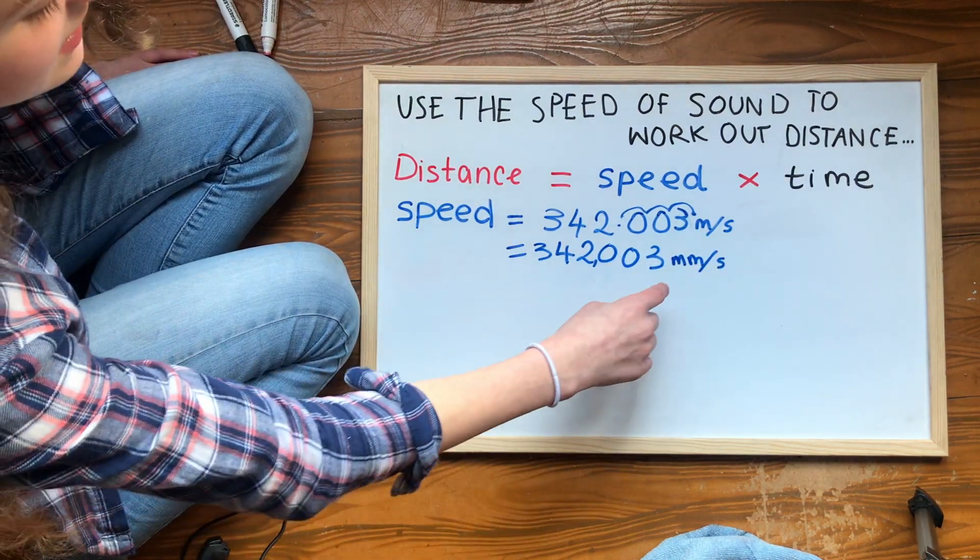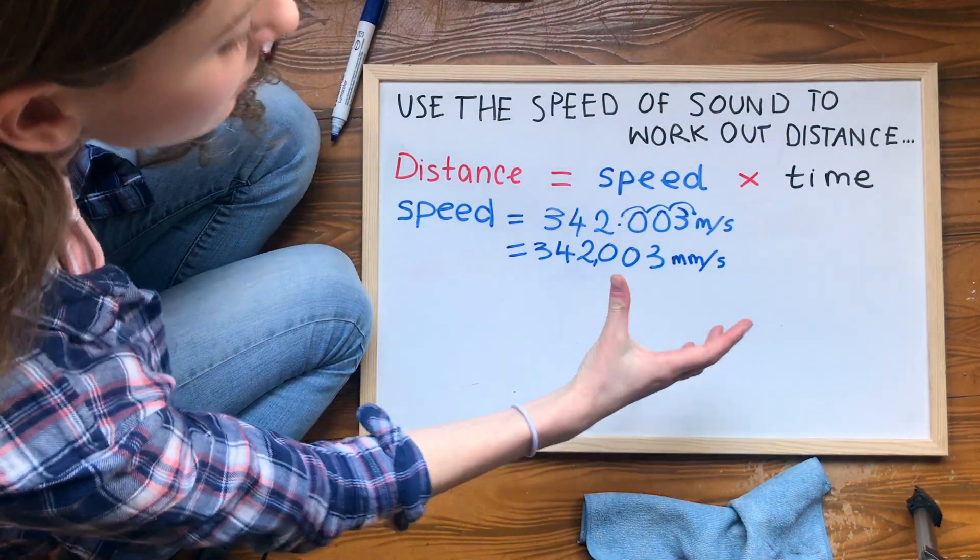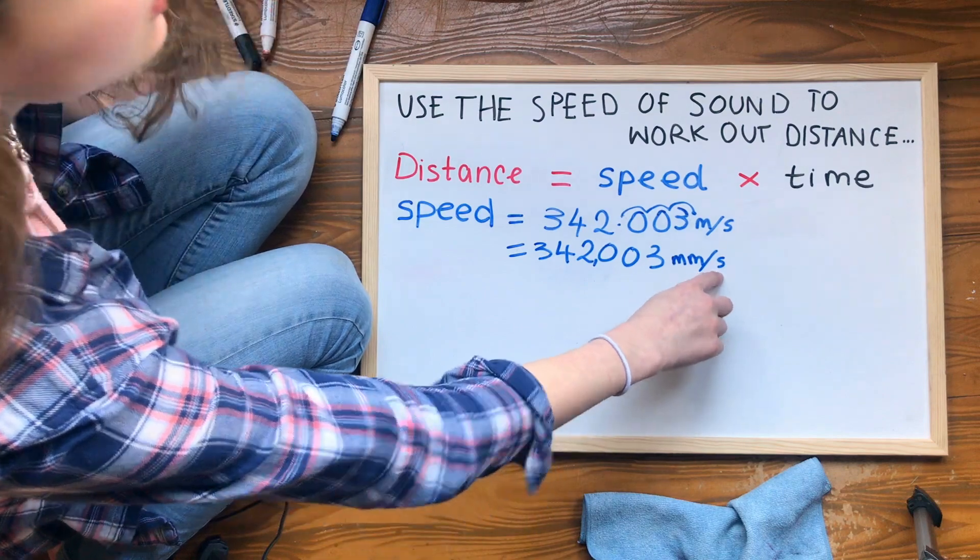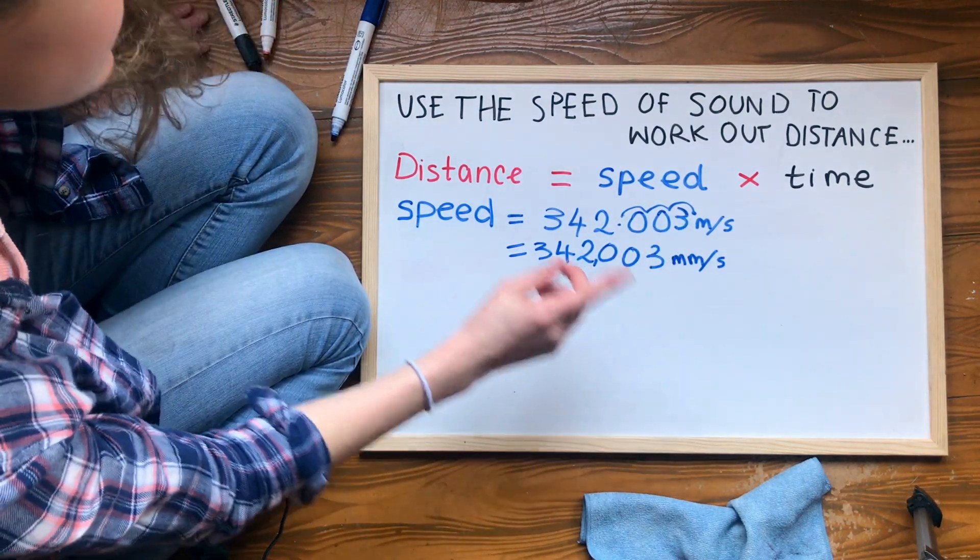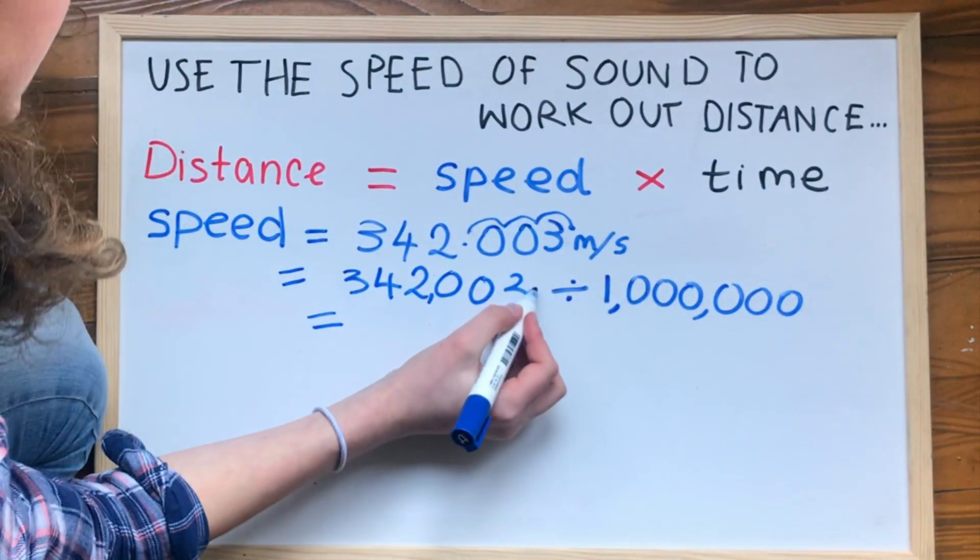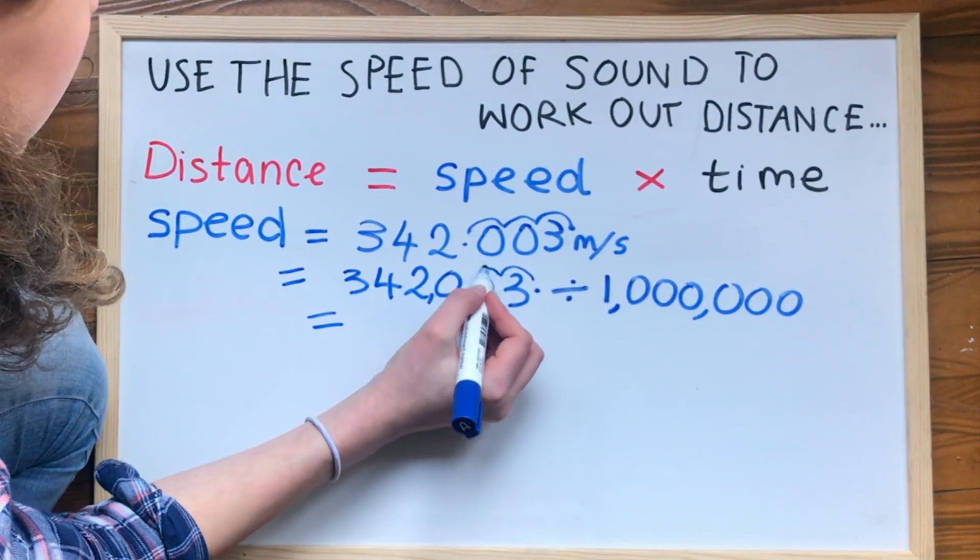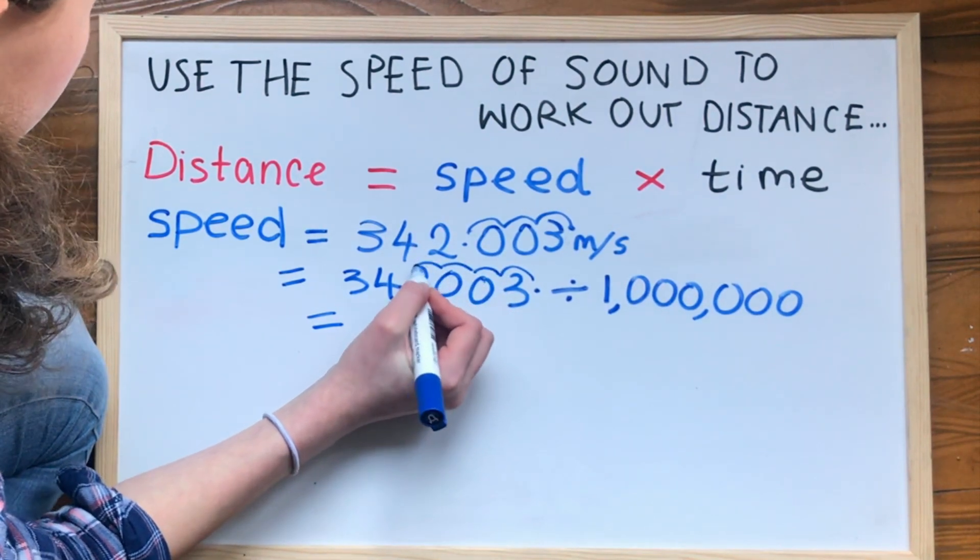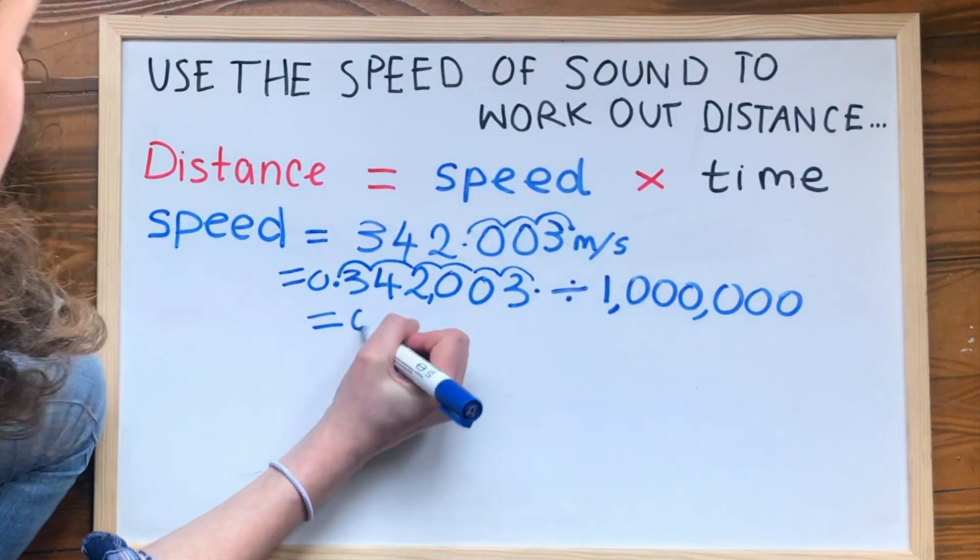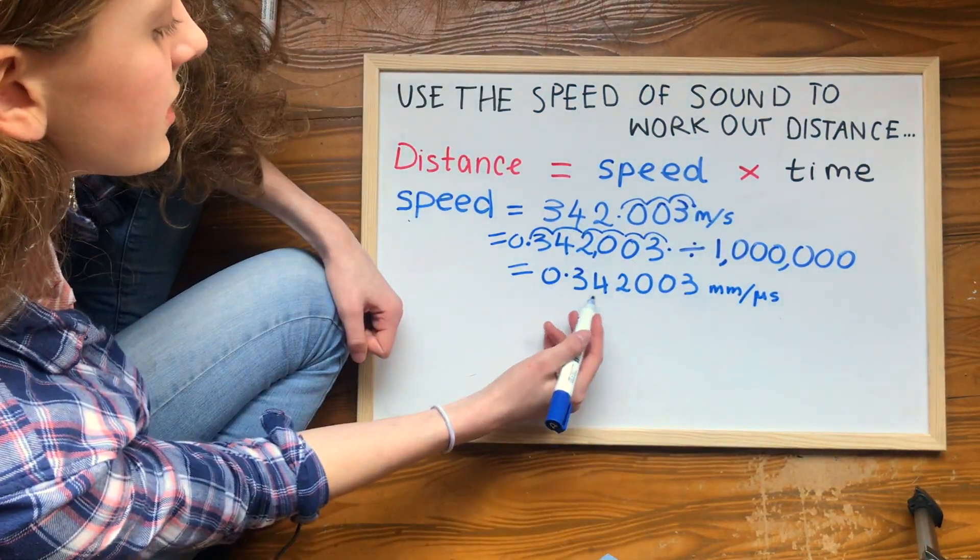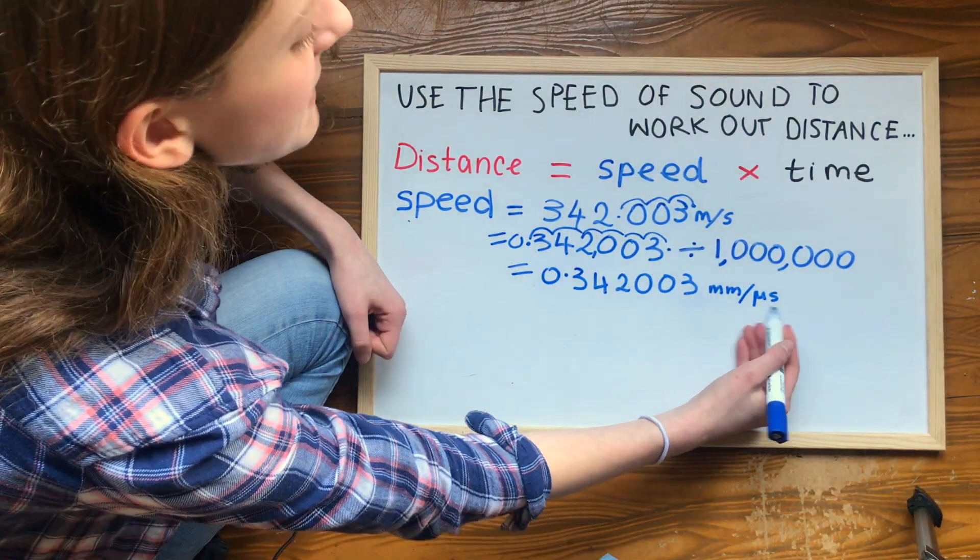So the speed of sound in this room is 342.003 millimetres per second. Now we just need to convert it into millimetres per microsecond. Well, there's a million microseconds in a second. So we just need to divide this number by a million and we'll have our answer. Six zeros. So we'll move the decimal point from here to one, two, three, four, five, six, zeroes there. So the answer is 0.342003 millimetres per microsecond.